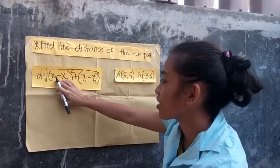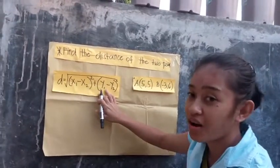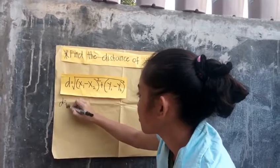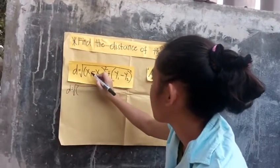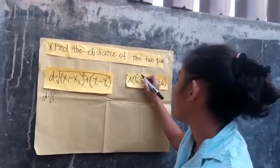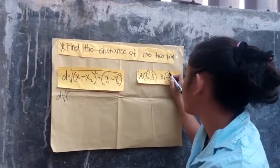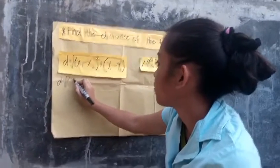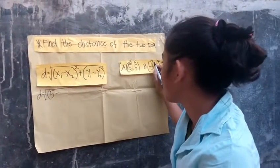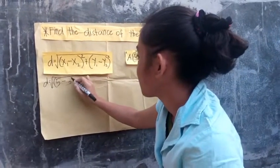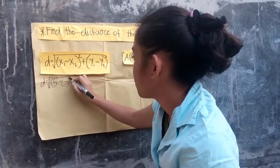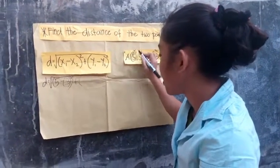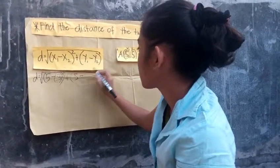The distance formula is: d equals the square root of (x₁ minus x₂) squared plus (y₁ minus y₂) squared. So x₁ is 5, y₁ is 5, x₂ is negative 3, and y₂ is 6. So we have: 5 minus negative 3, squared, plus 5 minus 6, squared.